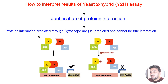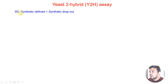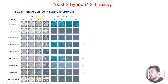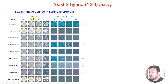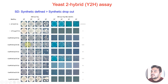Yeast two-hybrid assay is based on the working of SD medium. SD means synthetically defined or synthetic dropout. We artificially prepare these mediums and drop out two amino acids — leucine and tryptophan. All genes expressed in this medium will grow. This medium, which is only deficient in two amino acids, is called the non-selective medium.